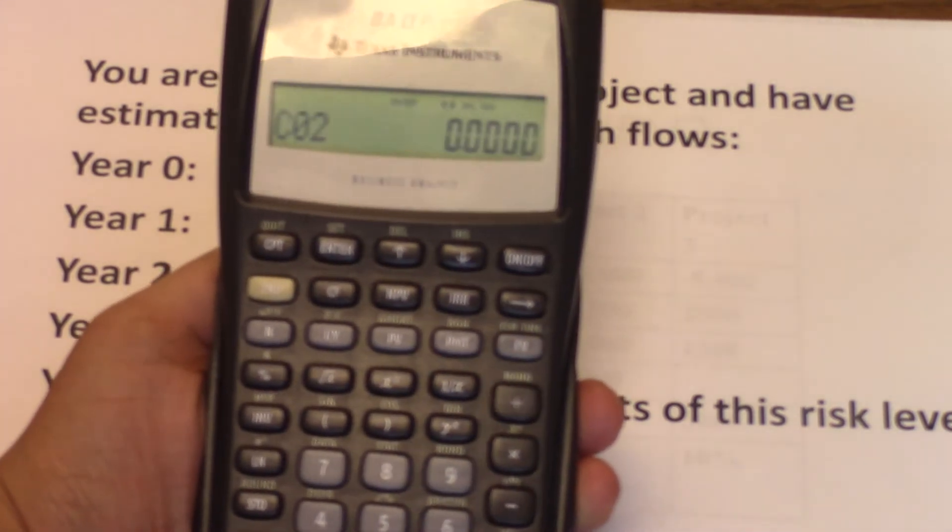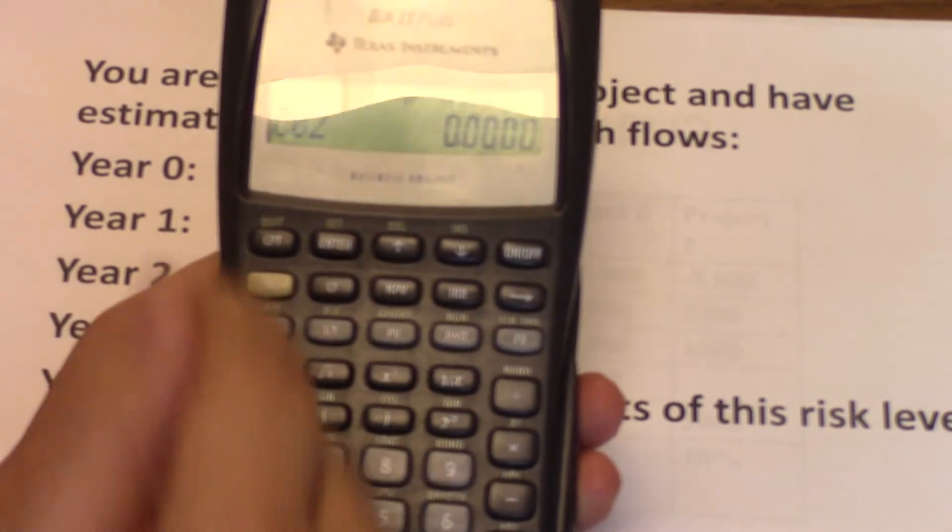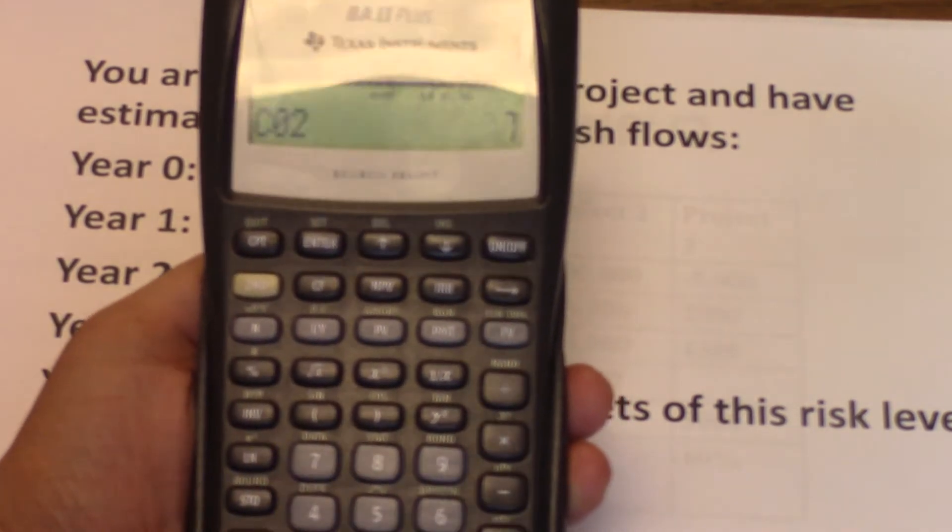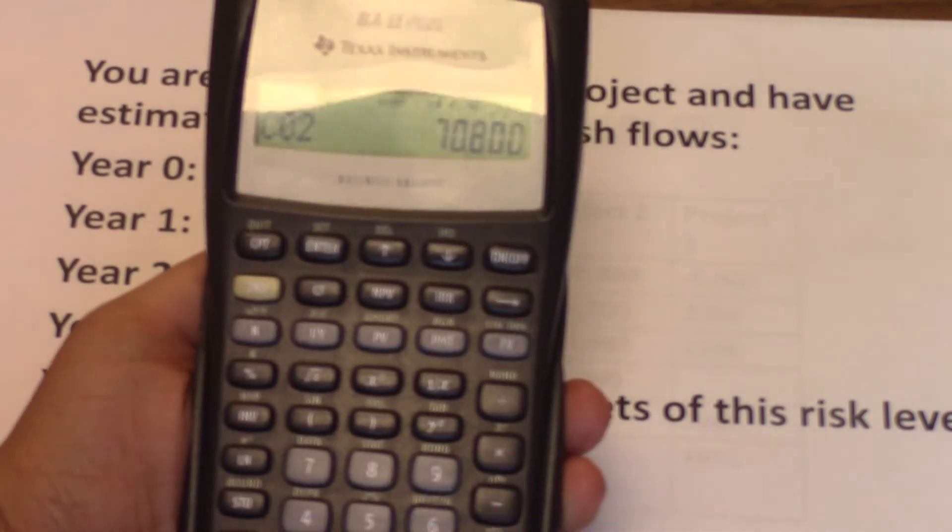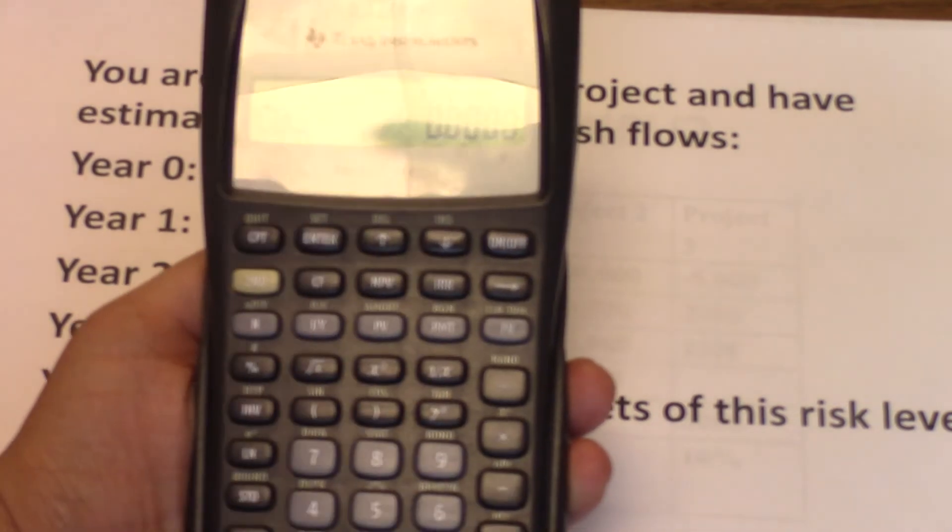We use the down arrow again and we're taken to cash flow year two. Cash flow year two is $70,800. So $70,800. Enter, down arrow. You're asked for the frequency. We keep it at one.